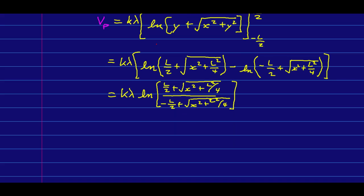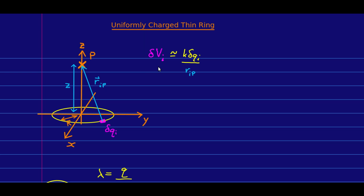Let's just check units to make sure. This is all a length plus a length over a length plus a length. And so this is unitless, and so all we have is k lambda, which is newton meter squared per coulomb squared, times coulombs per meter. And so that's newton meters per coulomb, which is joules per coulomb, which is volts.